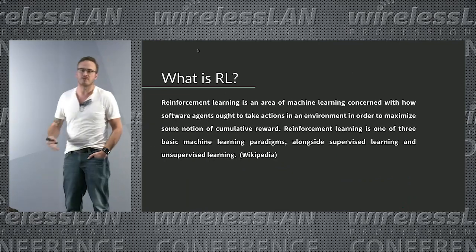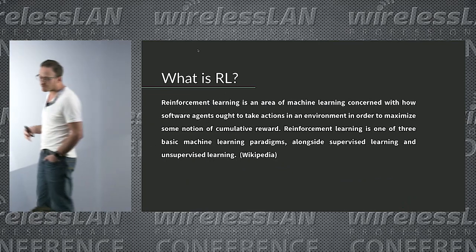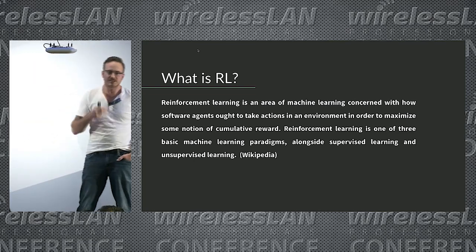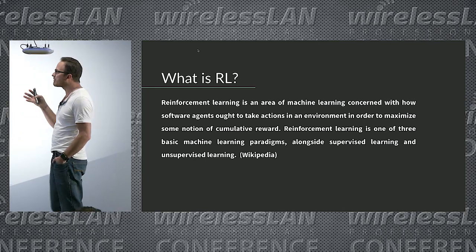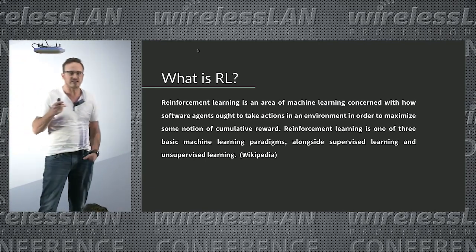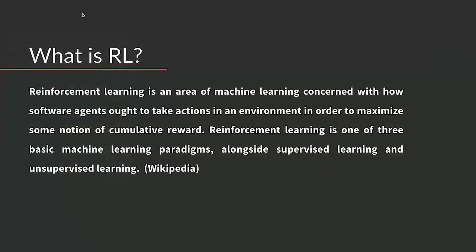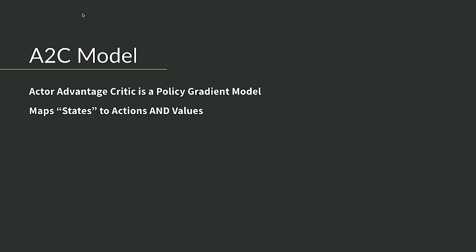Here's a quick definition of reinforcement learning so you understand what we're talking about — this is from Wikipedia, not made up. Reinforcement learning is an area of machine learning where we leverage software agents that take actions in an environment and try to maximize a cumulative reward — to figure out: if I make this choice, what will the result look like? There are three machine learning paradigms: supervised, unsupervised, and reinforcement learning. We're focusing on the reinforcement learning aspect today.